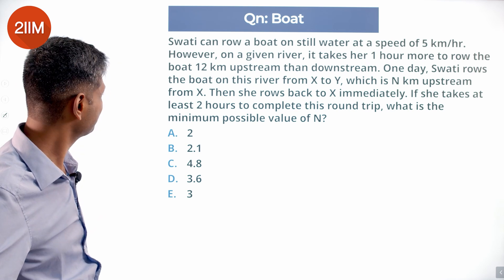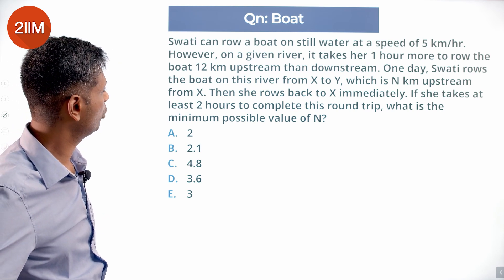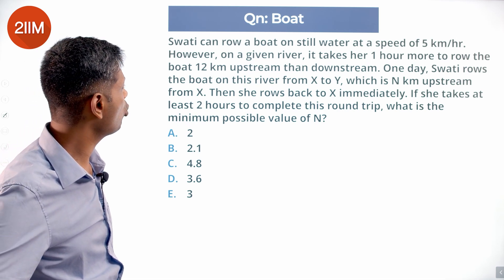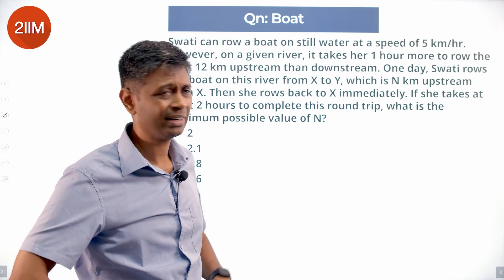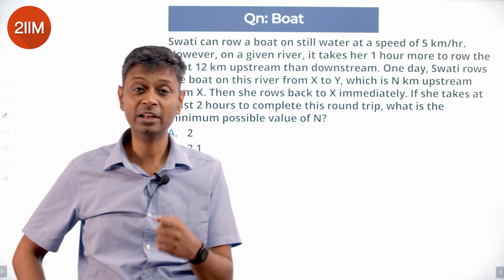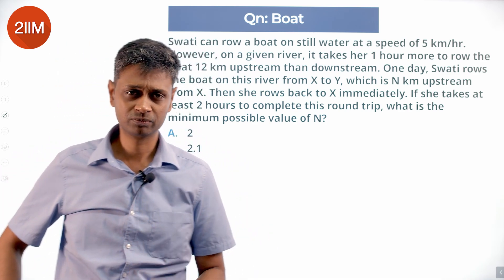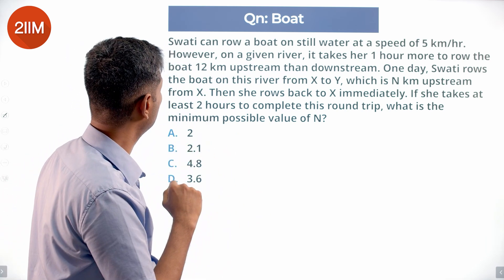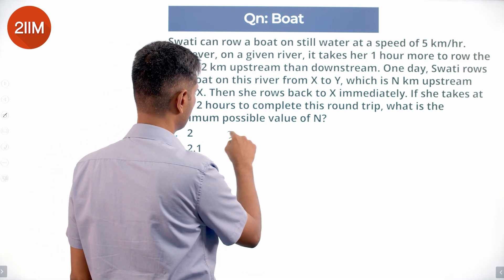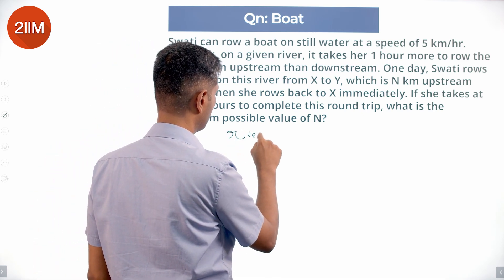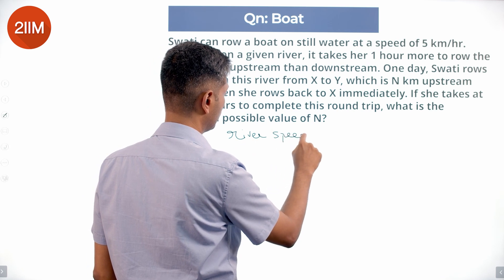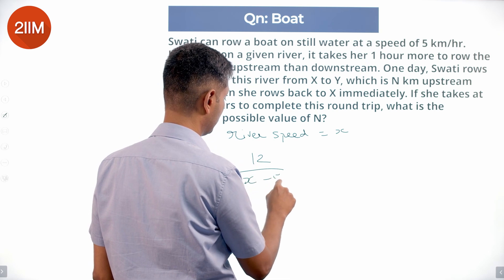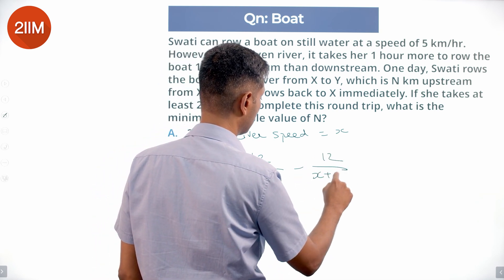Still water speed is 5 km per hour. We don't know the speed of the river. It takes her one hour more to row the boat 12 kilometers upstream than downstream. Upstream time taken minus downstream time taken equals 1. The distance is 12 kilometers. Let the river speed equal X. Then: 12 divided by (X minus 5) minus 12 divided by (X plus 5).